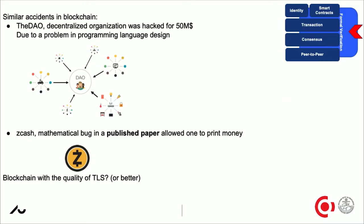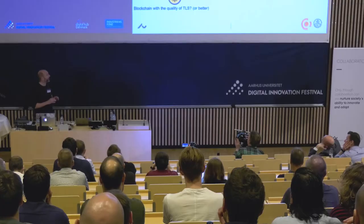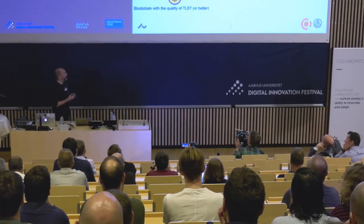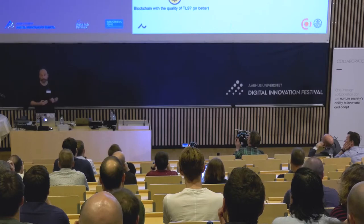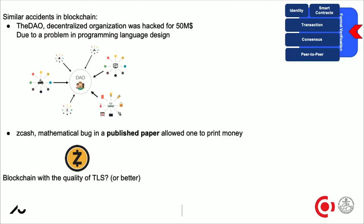This was a program that's only about a thousand lines of code — very small — and still there was such an enormous bug that it allowed someone to empty out the whole organization. Another bug published recently was in a cryptographic paper done by high-quality researchers that went through a scientific review process. Still there was a very subtle bug that allowed you to print money. We hope it hasn't been exploited, but we cannot be sure. All these things are ones that we have the technology to avoid by doing formal verification.